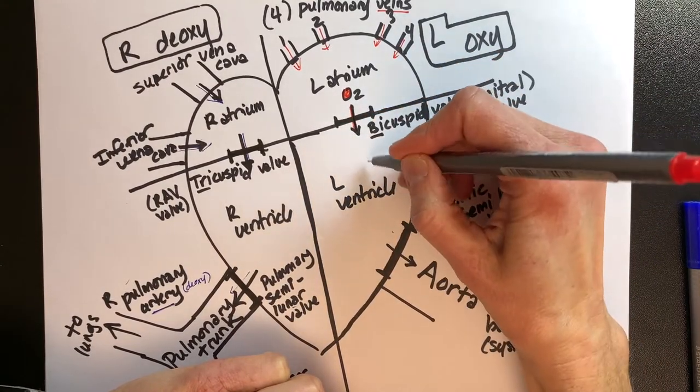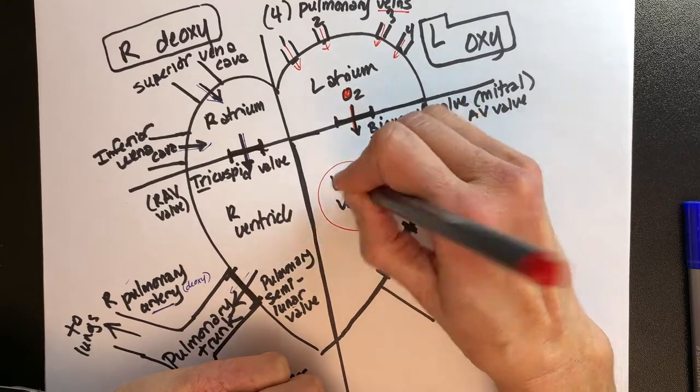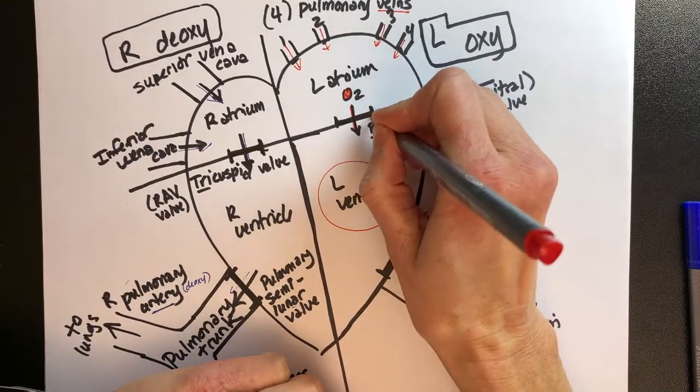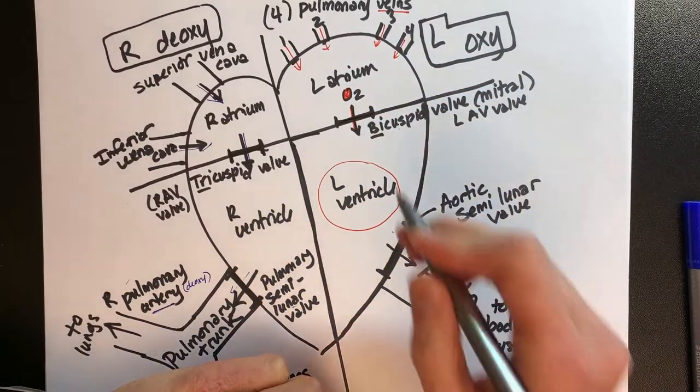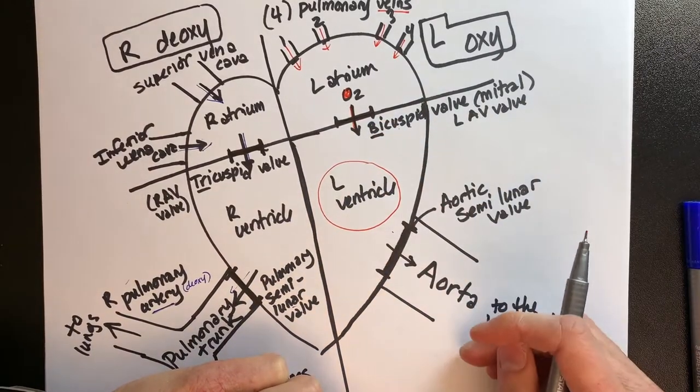We need to go down with our oxygen into this big left ventricle. Once we're down here, we need to shut this door behind us. So we're going to shut that bicuspid valve and now we're in the left ventricle.